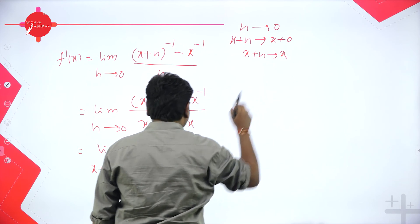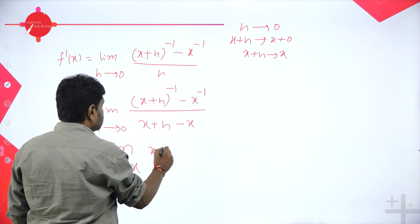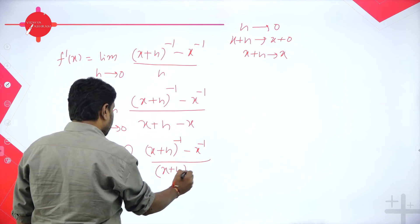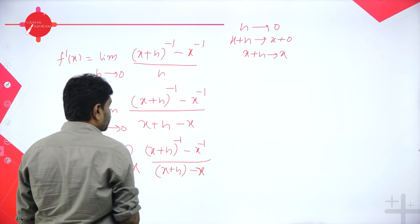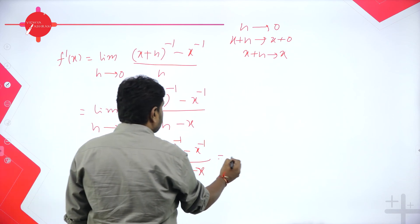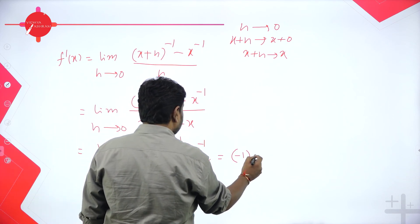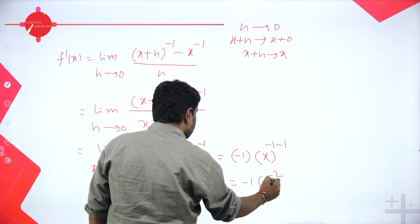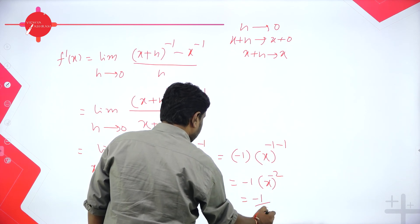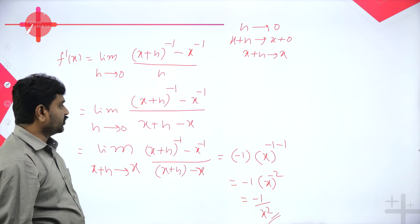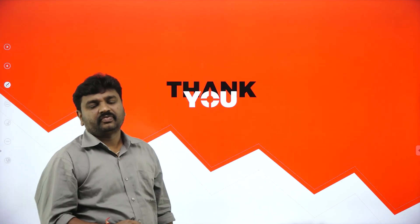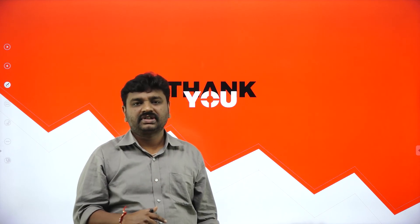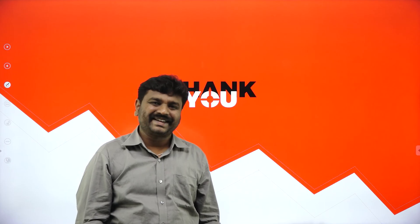The expression now resembles the theorem: [x^n minus a^n] divided by [x minus a] = n·a^(n-1). With n = −1 and a = x, this gives (−1)·x^(−1−1) = −1·x^(−2) = −1/x². So the derivative of 1/x is −1/x². I hope all of you got this. Please revise all these examples using the method of first principles. Thanks for attending. Thank you.